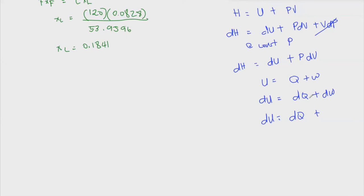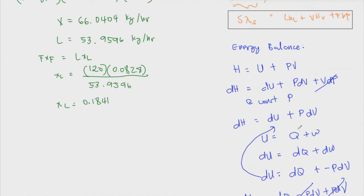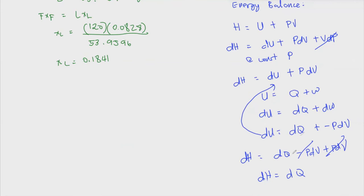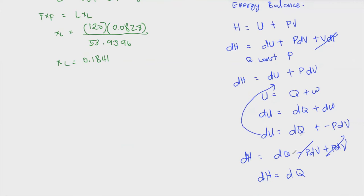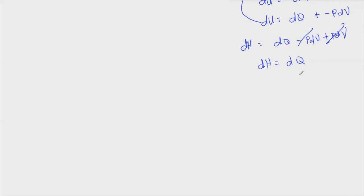Substituting, dH equals dQ minus P dV plus P dV, which leaves us with dH equals dQ. So any enthalpy change equals the heat change at constant pressure. This means the change in enthalpy can be expressed as Cp times delta T — the specific heat capacity times the change in temperature — since we're working at constant pressure.